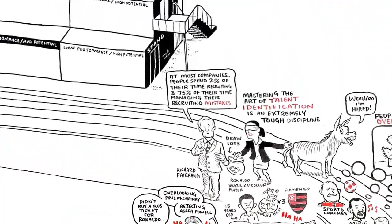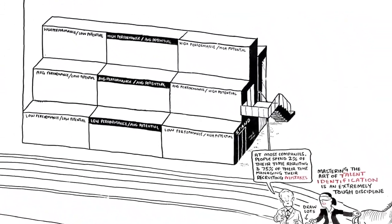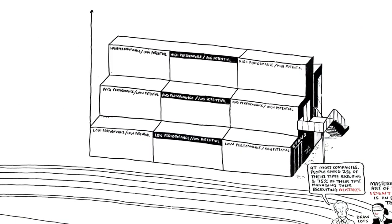An easy way to understand why we mess up talent identification is to separate performance from potential. Imagine a matrix like this.